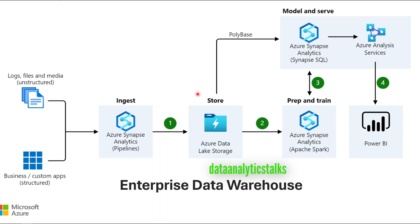To summarize the architecture: Azure Synapse Analytics pipelines bring data from all external sources; Azure Data Lake Storage holds the data; the Azure Synapse Analytics Apache Spark pool handles preparation and training, making unified data available in Azure Synapse Analytics via a dedicated SQL pool. Azure Analysis Service then serves the data for reports and dashboards.